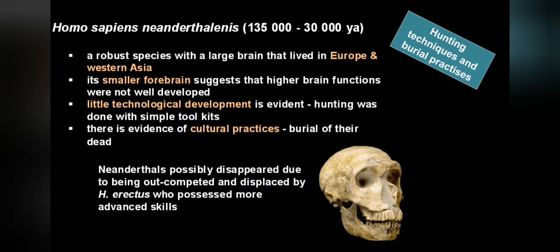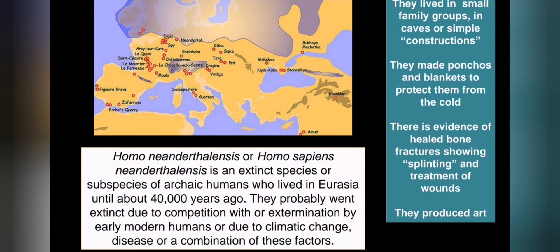Homo neanderthalensis are in a level of their own, with specific hunting techniques and burial practices. This skull looks a little more robust than the one in the previous video, but it's still pretty much a human skull, except the lower jaw is more protruding and there are massive eyebrow ridges. The wonderful thing about Neanderthals is that there's a huge amount of data - more than 300 fossils have been found - giving us a much bigger picture. Compare this to Australopithecus, where there are only a few samples, or 'Little Foot,' which is only three bones.